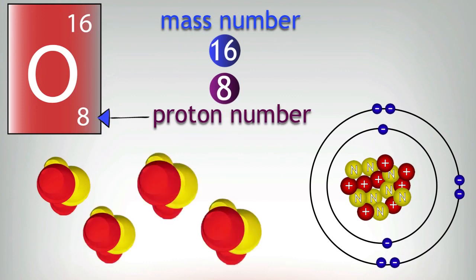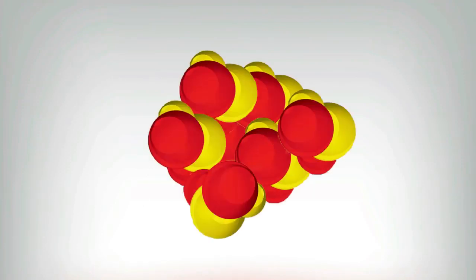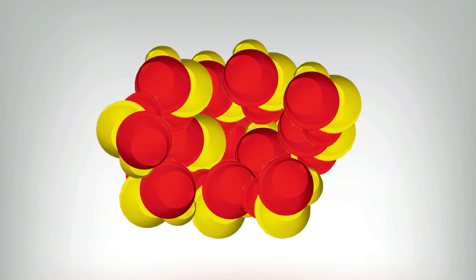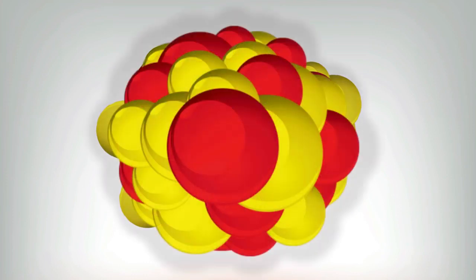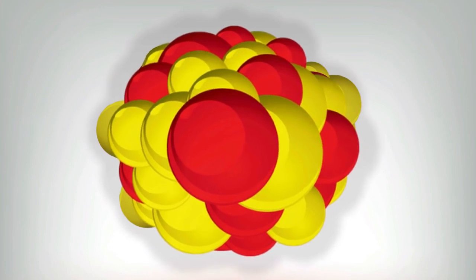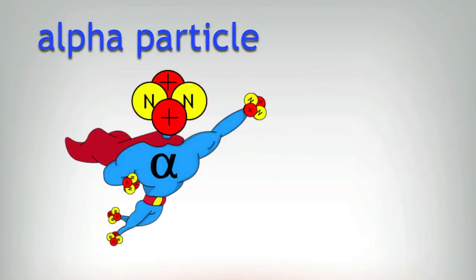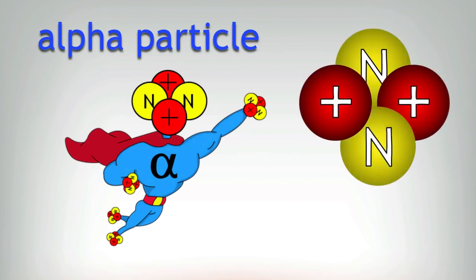The easiest way to build a bigger and bigger nucleus is to add two protons and two neutrons at the same time, just like this block here. So if you've got a really big nucleus that's so big it starts to become wobbly or unstable, bang — out comes two protons and two neutrons together in an alpha particle. An alpha particle is two protons and two neutrons.